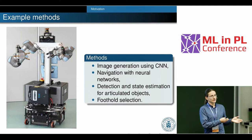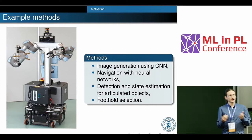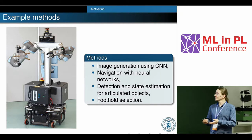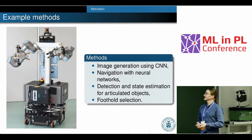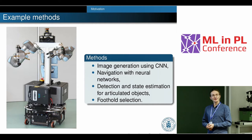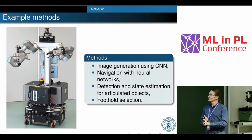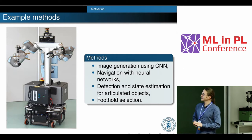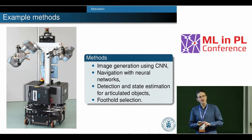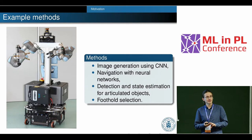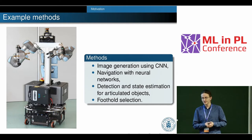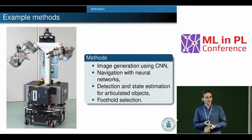I will give you four examples of how we use deep neural networks in mobile robotics. The first method is image generation using neural networks. The second is how we use neural networks in navigation. The third method is detection and estimation of articulated objects like doors. And finally, foothold selection for legged robots.